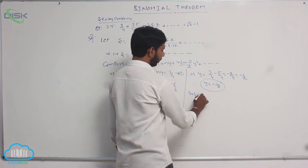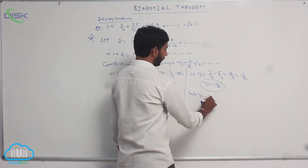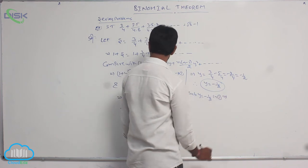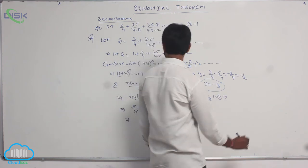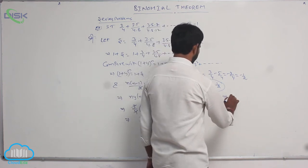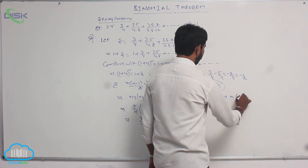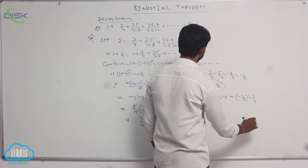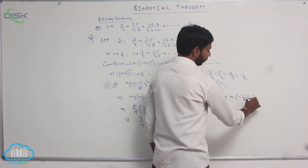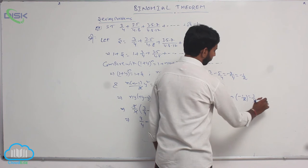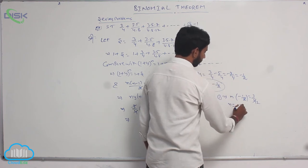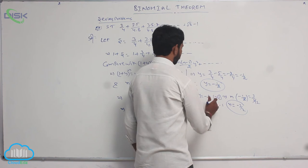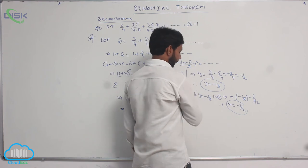Substituting y = −1/2 in condition number 1: n × (−1/2) = 3/4. The 2 cancels, giving n = −3/2. Therefore n = −3/2.